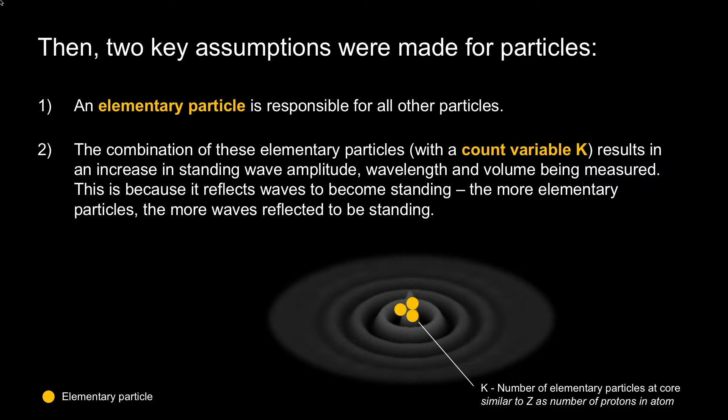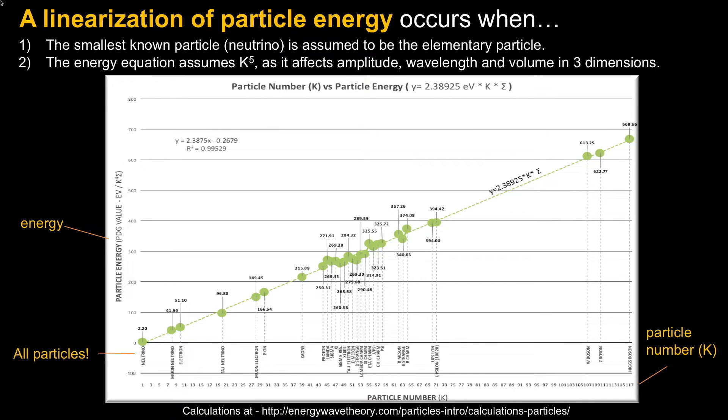These assumptions were plotted out where the particle count was taken to the fifth power because it affects amplitude, wavelength, and volume in three dimensions. It was given a starting point. What is the particle count of one? It was taken to be the neutrino because it's the smallest known particle.